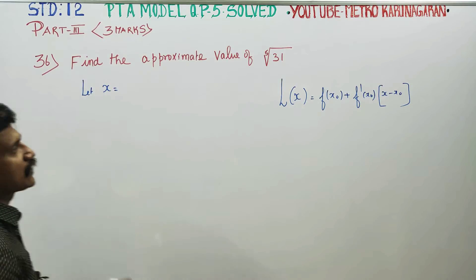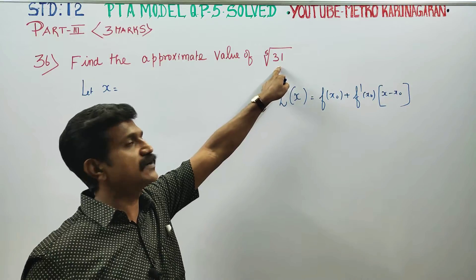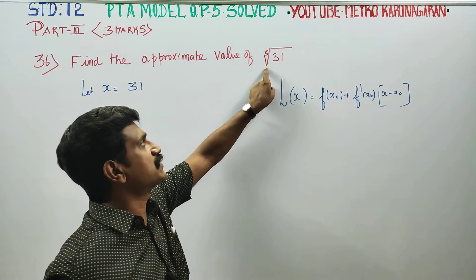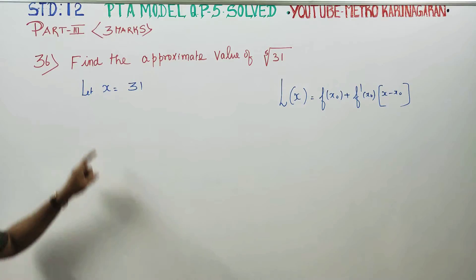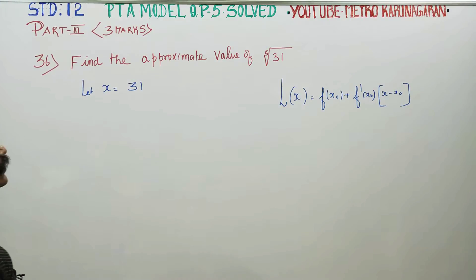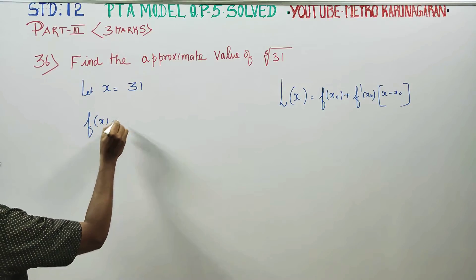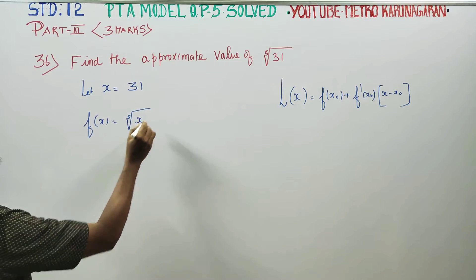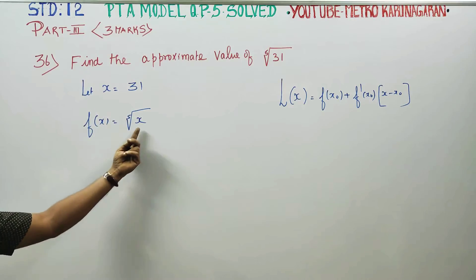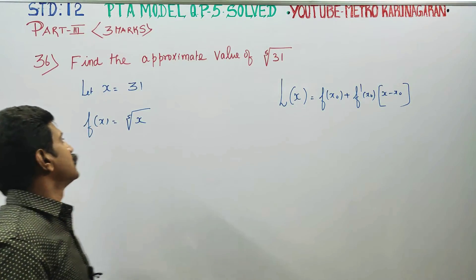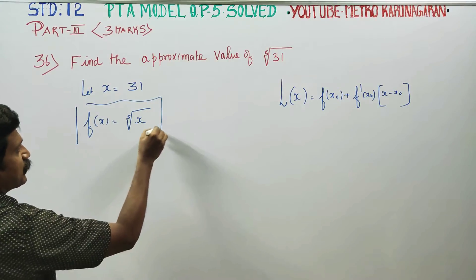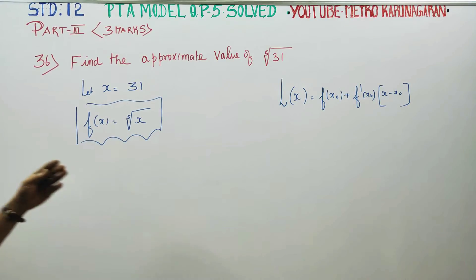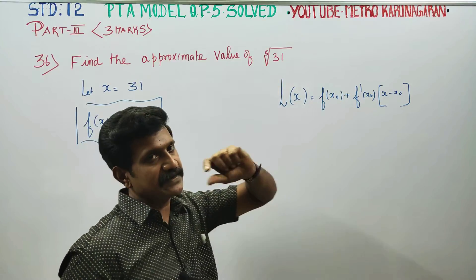Let x equal to 31, since that is our approximation number. The root — specifically the 5th root — is our function. So x equals 31, and our function f of x is the 5th root of x.